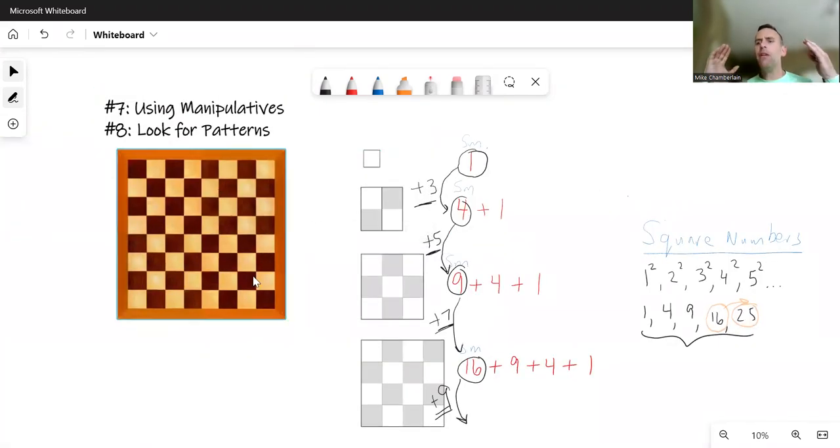So using manipulatives, think about something you can touch, you can move. Looking for patterns, a lot of times you're examining either a picture pattern, as you're seeing, or a number pattern. So you just got to keep your feelers out there with these kinds of strategies.